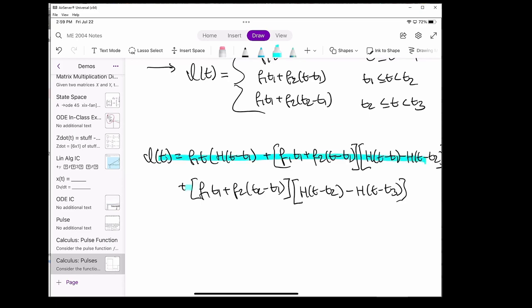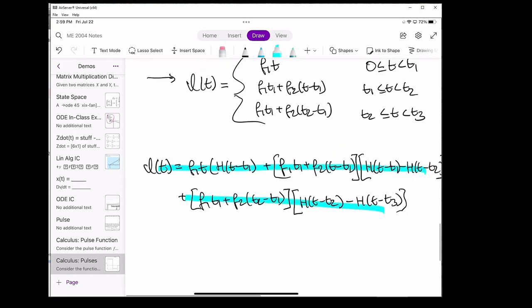This pretty long expression gives us an equivalent representation of I of t. So this is how we do it analytically. In the next video, we're going to redo this problem using a more graphical approach. See you next time.